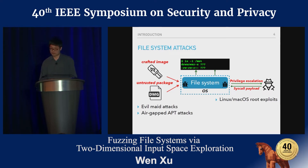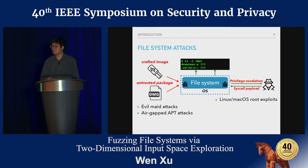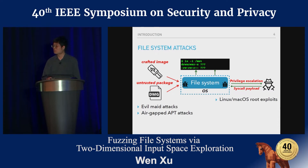By giving some malicious disk images through malicious USB drives or untrusted installation packages, bugs inside file systems can be exploited through mounting or even auto-mounting supported by the operating system. We can see real cases such as air-gapped APT attacks or evil maid attacks. Attackers can also invoke syscall payloads on a mounted disk image to trigger bugs inside file systems, leading to a lot of root exploits.